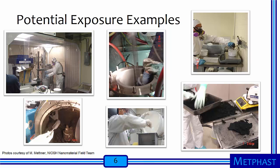Here are some examples from workplaces where nanomaterials are produced and handled. In the upper left, a nanomaterial handling operation is housed in a ventilated enclosure. In the lower left and upper middle photos, nanomaterials are harvested after production. In the lower middle and right photos, nanomaterials are being handled in raw form and after being mixed into other matrices.